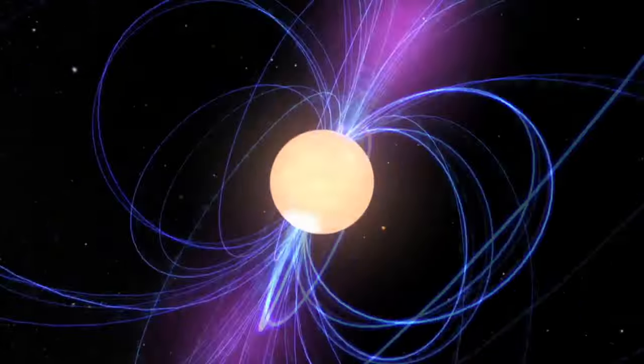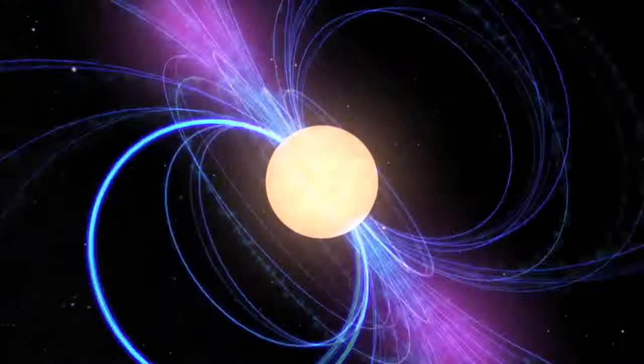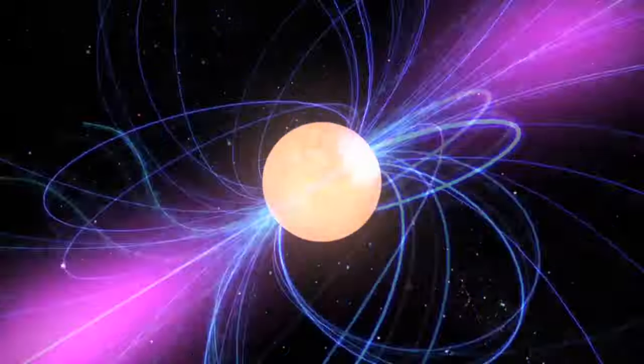If aligned correctly, it flashes in our direction twice each cycle. These signals are highly regular. In fact, pulsars are some of the best clocks in nature, and this allows extremely precise measurements of their motion.